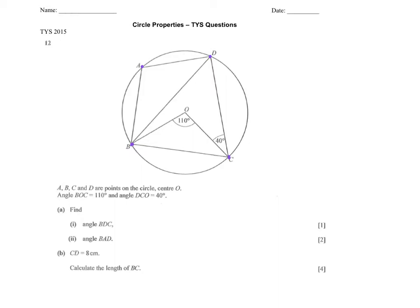And not only that, we have angle BOC at the center O. We notice that we can have an angle at the center being twice the angle at the circumference. So in this case, I know that this is 110 degrees. That gives me this angle as 110 divided by 2, which is 55 degrees.